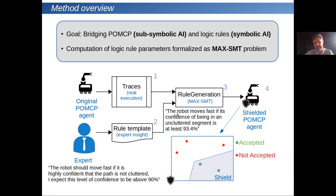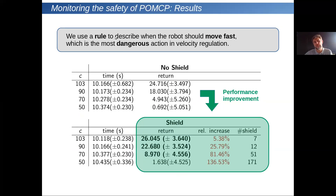This yields a rule stating that the robot moves faster if its confidence of being in an uncluttered segment is at least 93.4%, a number computed from real-world execution. We then use this new logic rule as a shield for POMCP: the shield accepts some actions proposed by POMCP but rejects others that are shielded. The rule describes the action when the robot moves faster, which is the most dangerous action in this problem, and we obtain a performance improvement using the shield.